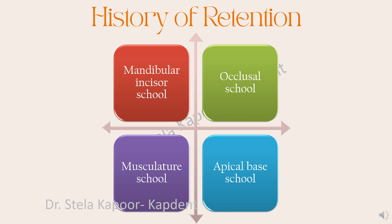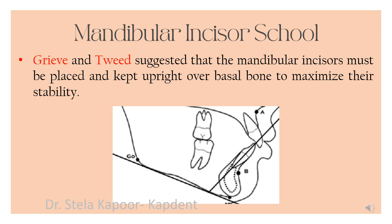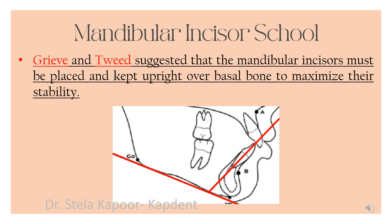I personally memorize these using a mnemonic — MOMA — and you can make your own. Starting with the first one: this was proposed by Grieve and Tweed, and it talks about the positioning of the mandibular incisors being upright on the mandibular plane, or an IMPA angle of around 90 degrees as used in Tweed's analysis. According to this school of thought, the mandibular incisors must be placed and kept upright over the basal bone in order to maximize their stability.